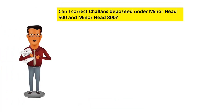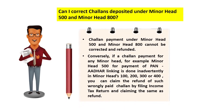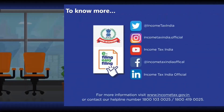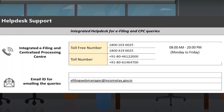Another question: can I correct chalans deposited under minor head 500 and minor head 800? Please note that chalan payment under minor head 500 and minor head 800 cannot be corrected and refunded. Conversely, if a chalan payment for minor head 500 (PAN-Aadhaar linking) is done inadvertently under minor heads 100, 200, 300, or 400, you can claim a refund by filing an income tax return and claiming it as refund. Chalan correction has now become very easy. Visit www.incometax.gov.in or contact our helpline for more information.